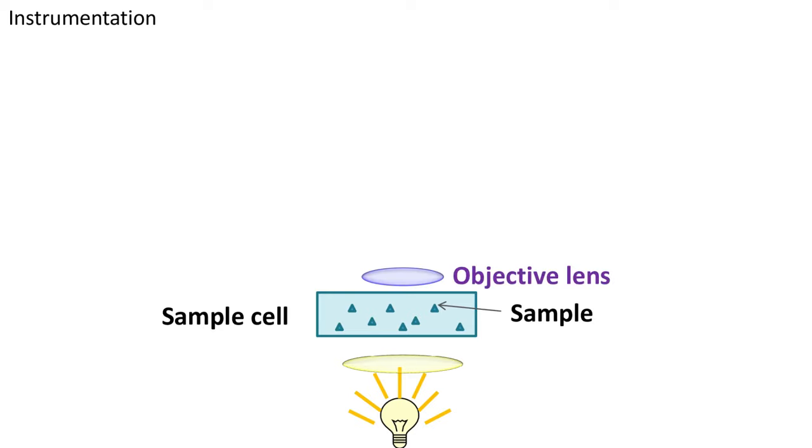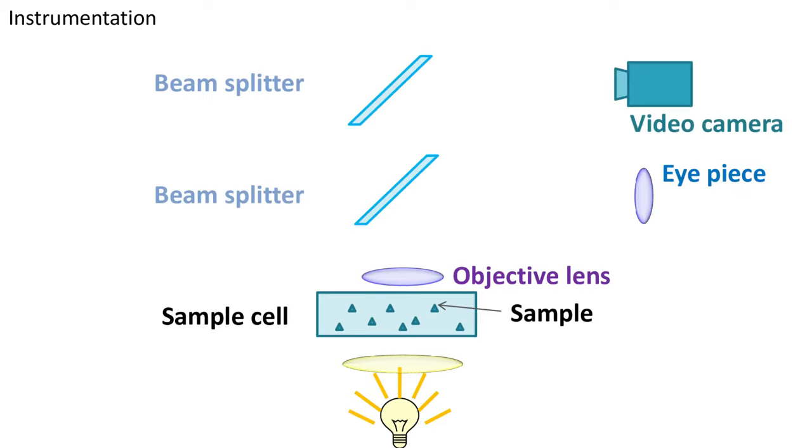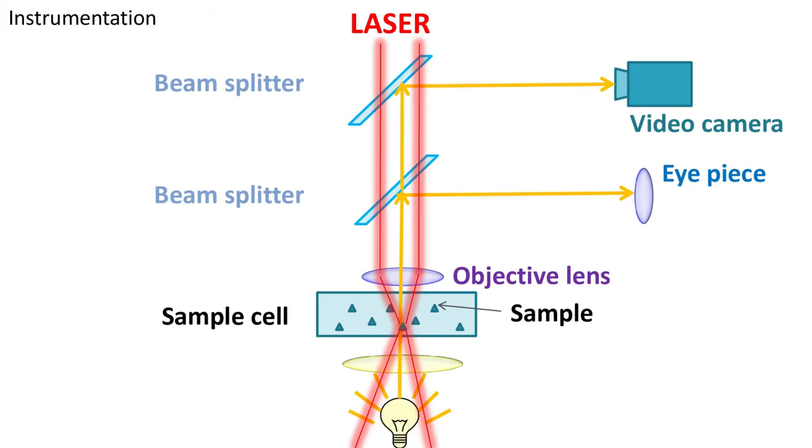On the top, we have an objective lens just like the objective lens of a microscope. Further on the top, we have two beam splitters. One of them directs the light towards the eyepiece where the user can see the specimen. And the second one directs the light towards the video camera where the digital image of the specimen can be taken. On the top, we have the laser. And the laser passes through the beam splitters, gets focused by the objective and traps the specimen in the focal point.